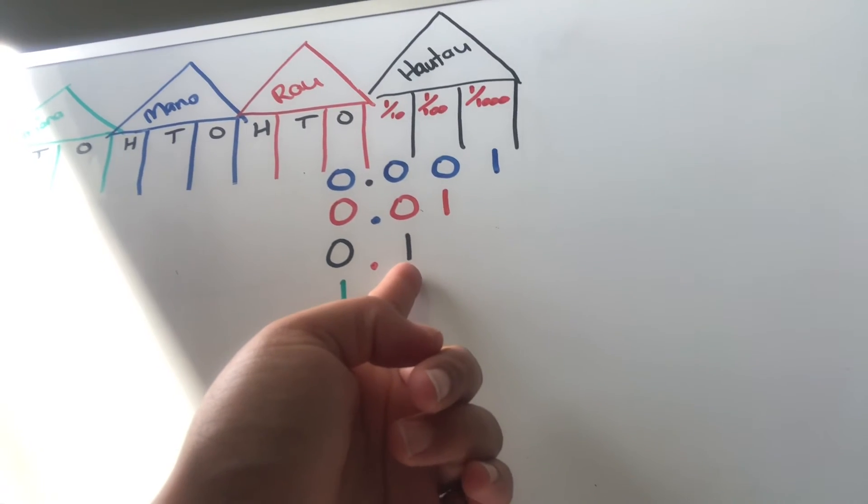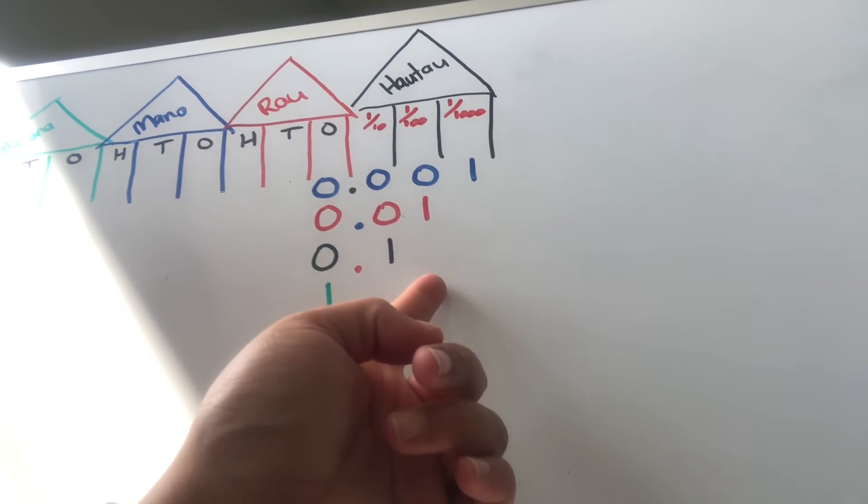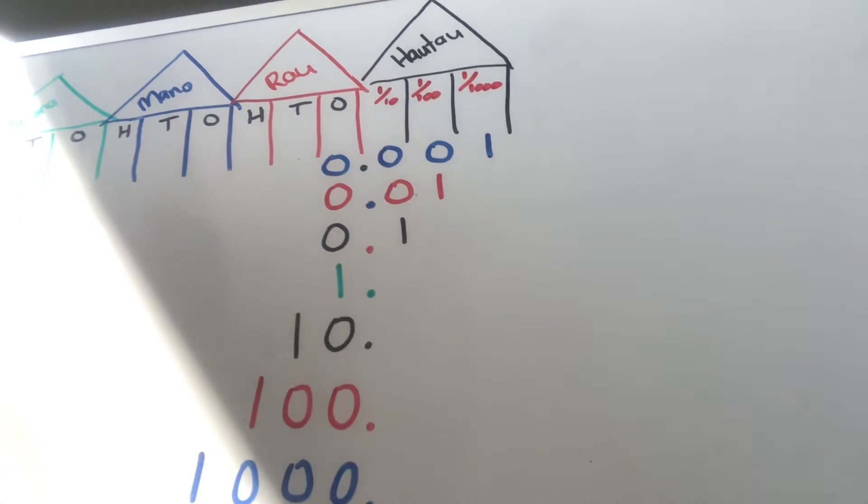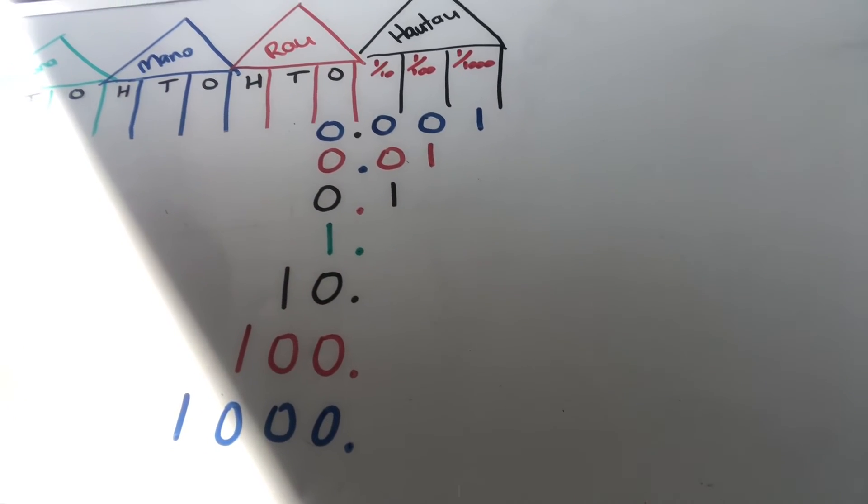We know that we'll need nine tenths or 90 hundredths, which is also what we call cents, because cent means to have out of a hundred.